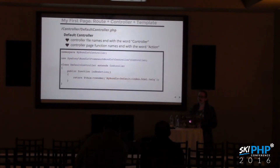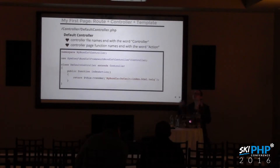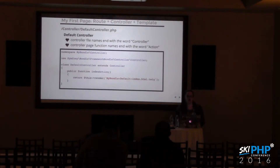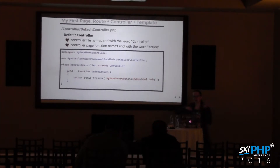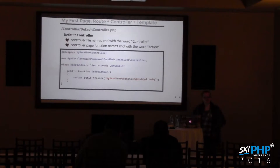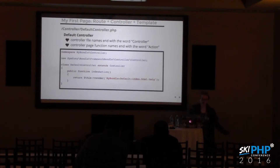Looking at the Controller directory, it has automatically generated 'DefaultController.php'. This is a Symfony naming convention — all controller files need to end with the word 'Controller' before the PHP extension. Inside the controller, the first function created is 'indexAction', which is another Symfony naming convention. All controller functions that respond to a route must end with 'Action'. If you forget that, it will throw an error — so if you get an error, first check whether you appended 'Action' to the end of your function definition.